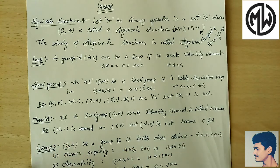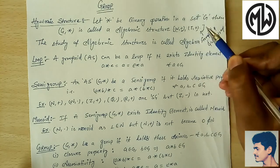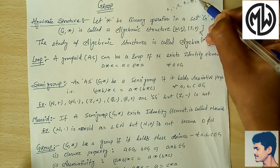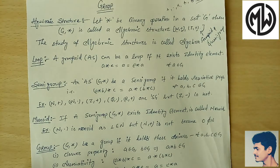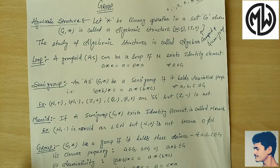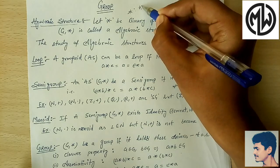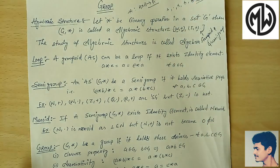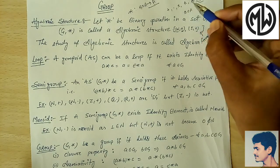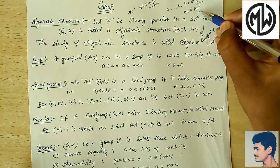Binary operation — the important thing here is what a binary operation is. The signs we have — plus, dot, cross, star, ring plus, ring dot — these are called binary operations. A binary operation is basically a mapping from A cross A to A, where A is a given set. The most important property it holds is the closure property. Closure property: if a belongs to A and b belongs to A,